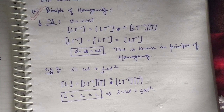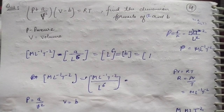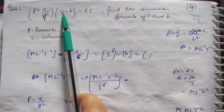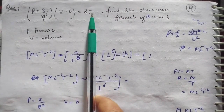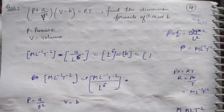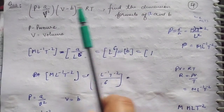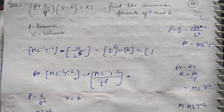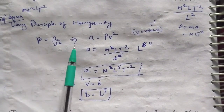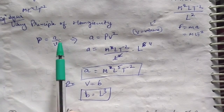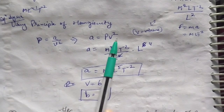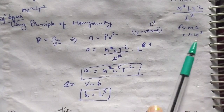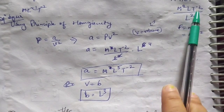Now we apply the principle of homogeneity to solve questions. We have: (p + a/v²)(v − b) = RT, where v is volume, p is pressure, a and b are constants, R is the gas constant, and T is temperature. We have to find the dimensions of a and b. Using principle of homogeneity, p equals a/v², so a = p·v². Pressure has dimension ML⁻¹T⁻², because pressure equals force upon area.